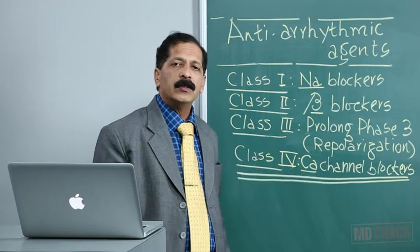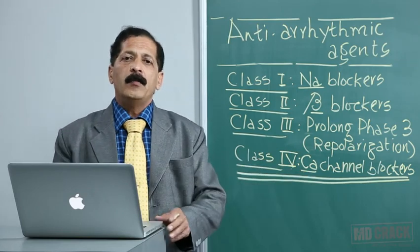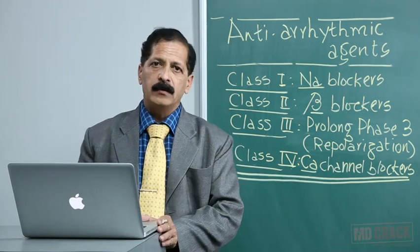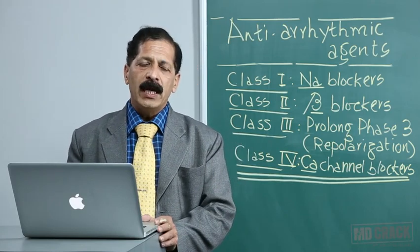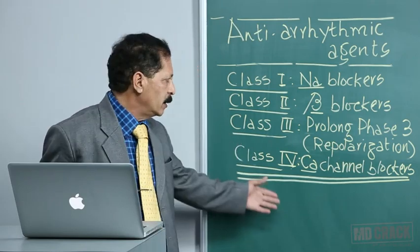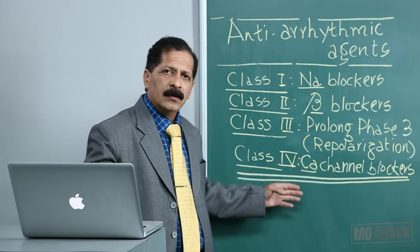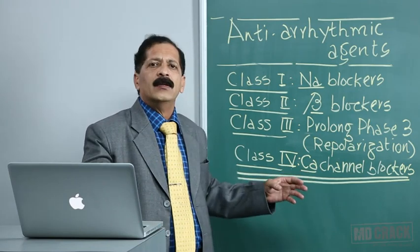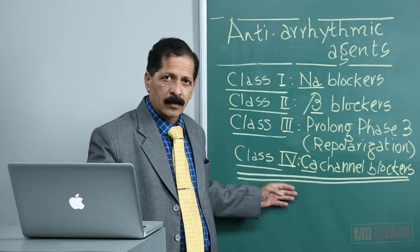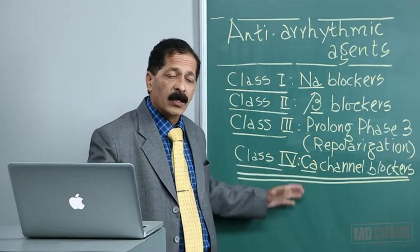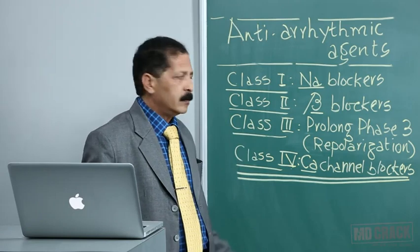So there are four main classes of antiarrhythmic agents. You can add another group — some call it class 4-like or class 5, but in my view I just call them 'other agents' because they have different kinds of actions.